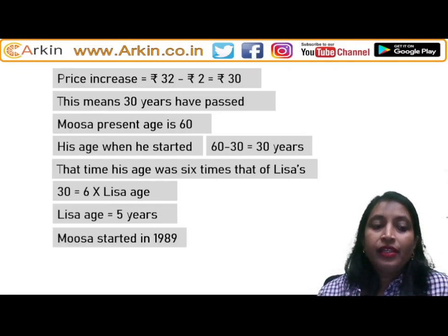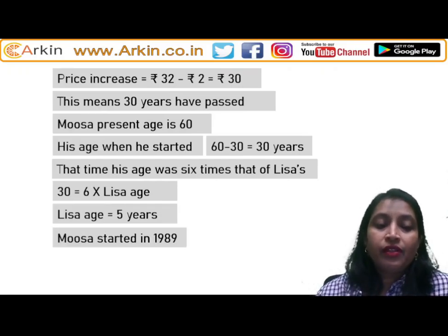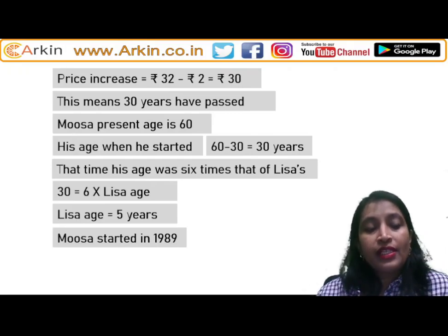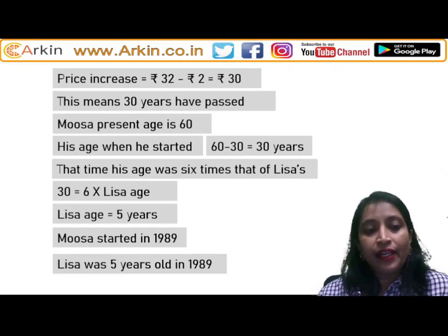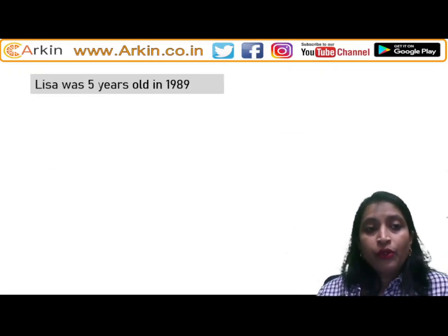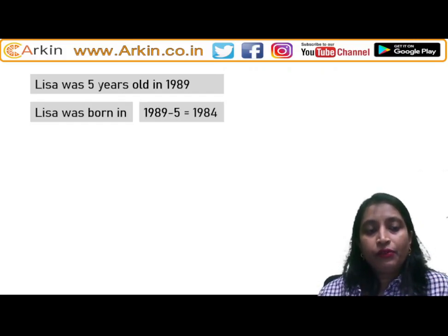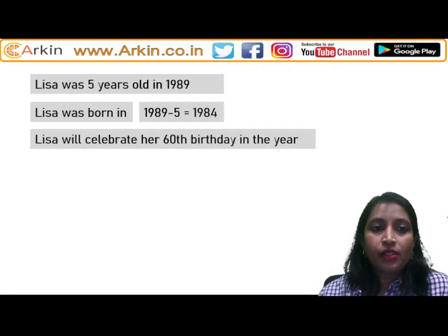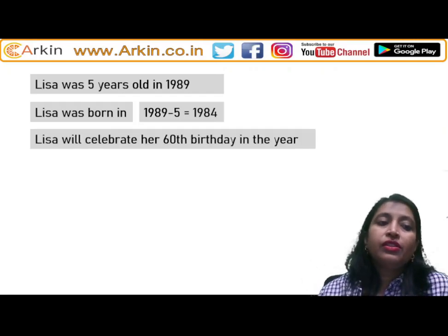From the board, that year was 1989. So Lisa was 5 years old in 1989, which means Lisa was born in 1984. The question asks when she will turn 60.